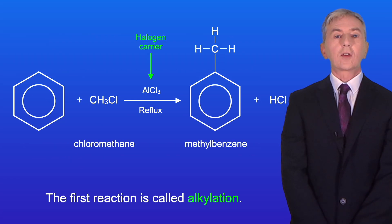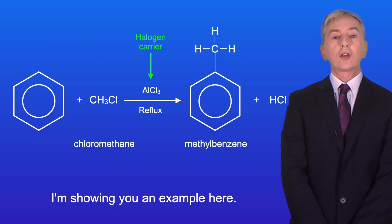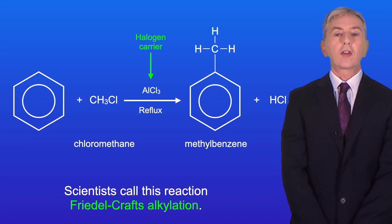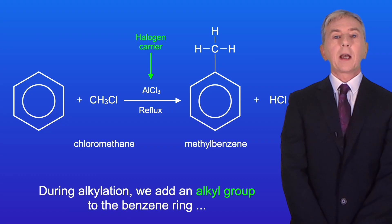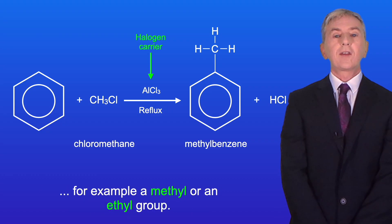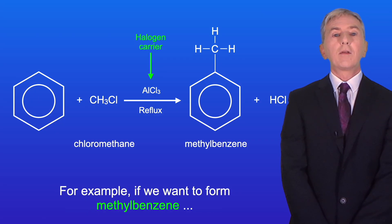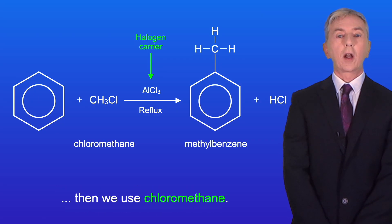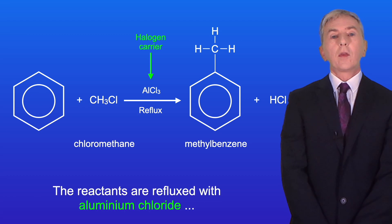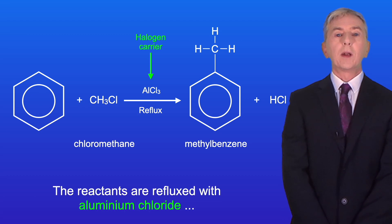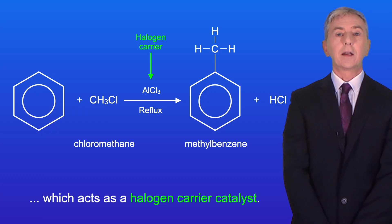The first reaction is called alkylation — scientists call this Friedel-Crafts alkylation. During alkylation we add an alkyl group to the benzene ring, for example a methyl or an ethyl group. The starting materials are benzene and the relevant haloalkane. For example, if we want to form methylbenzene then we use chloromethane. The reactants are refluxed with aluminium chloride, which acts as a halogen carrier catalyst.